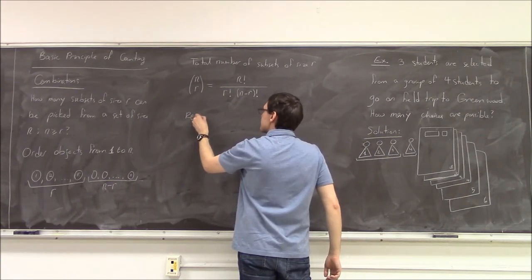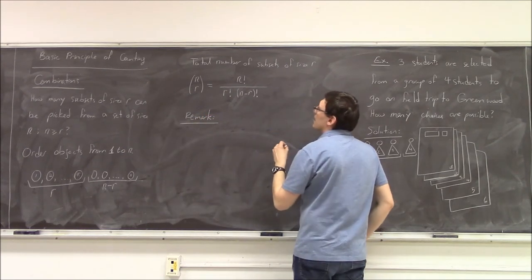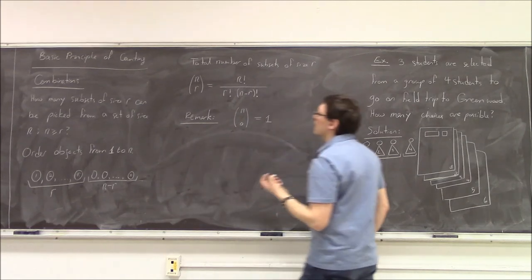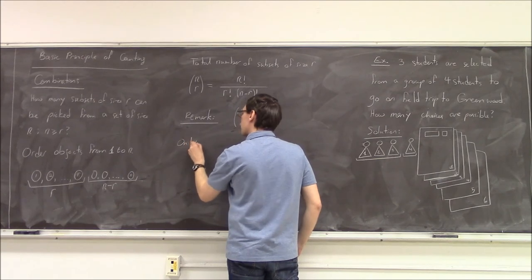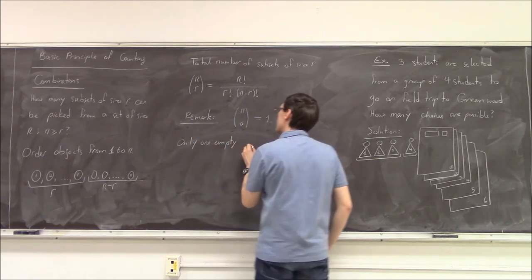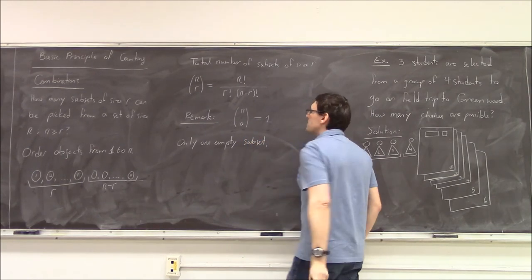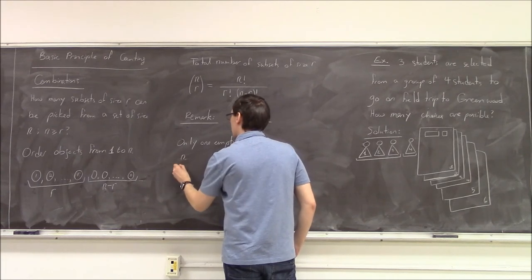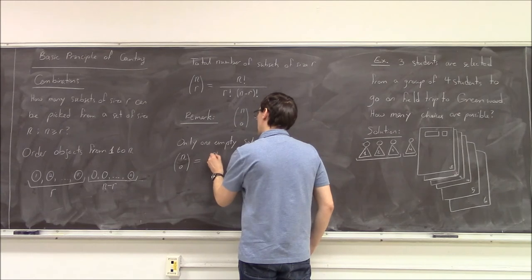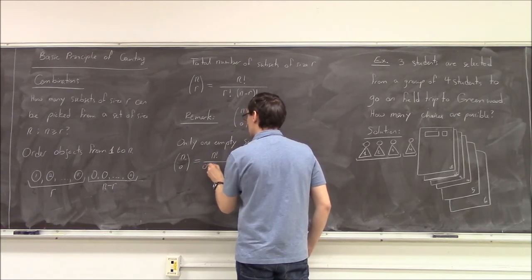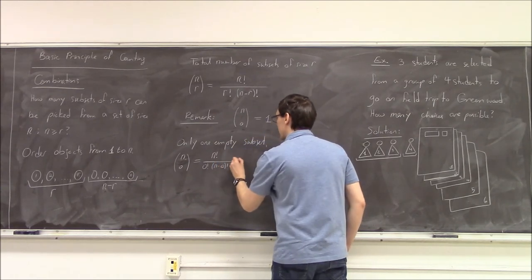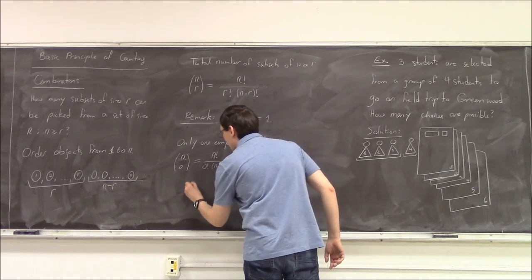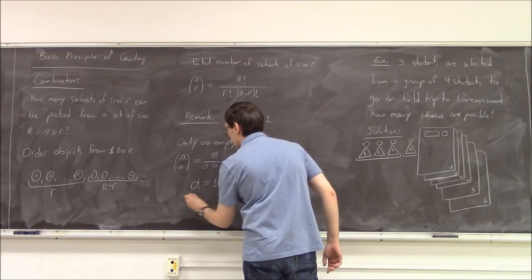Remark: you should notice that if I have n choose 0, that happens to be 1 because there is only one empty subset. To make it work, we will require 0 factorial. Think about it: we have the formula n choose 0, and we want the formula to still work. That would be n factorial divided by 0 factorial times (n minus 0) factorial. So what we get is 1 divided by 0 factorial. In order to make this sensible, I am going to say that 0 factorial is by definition 1.